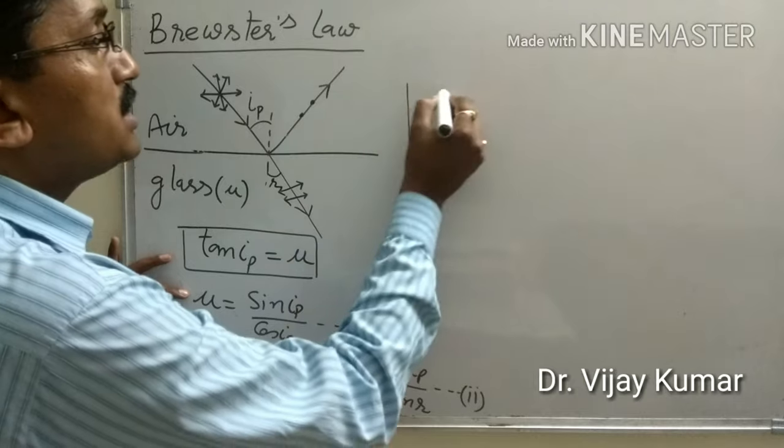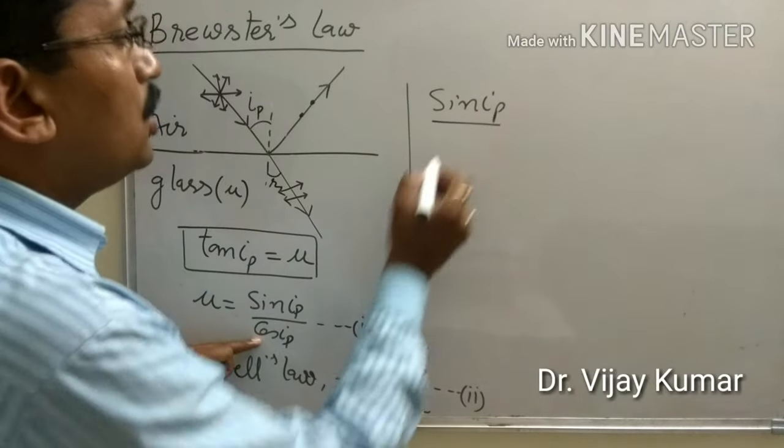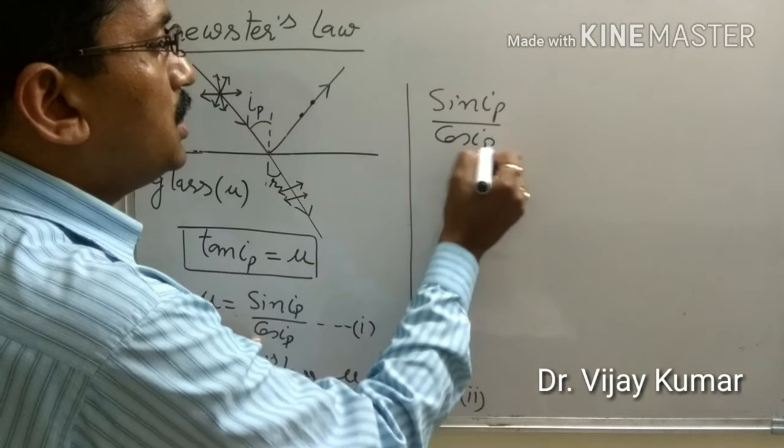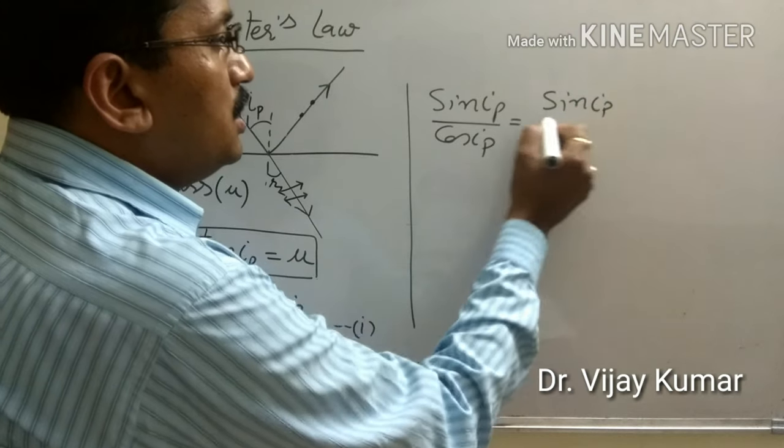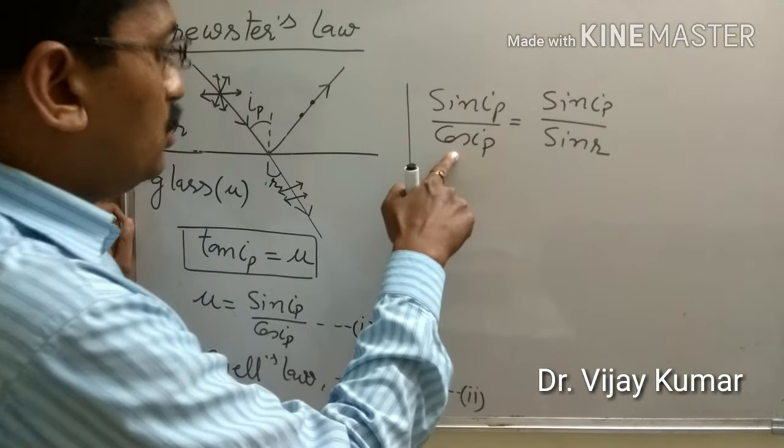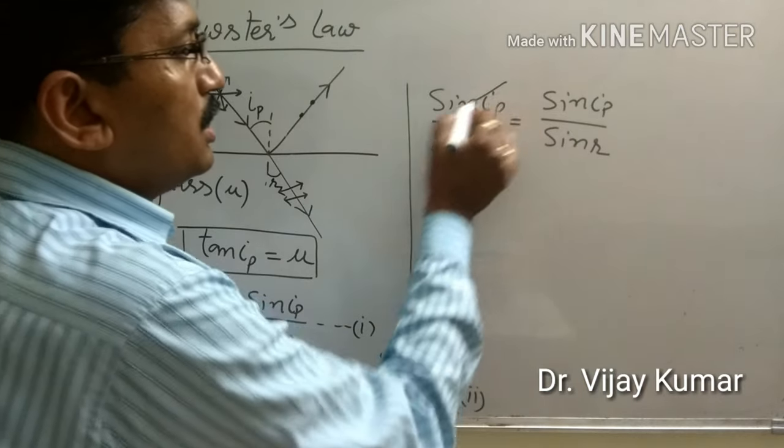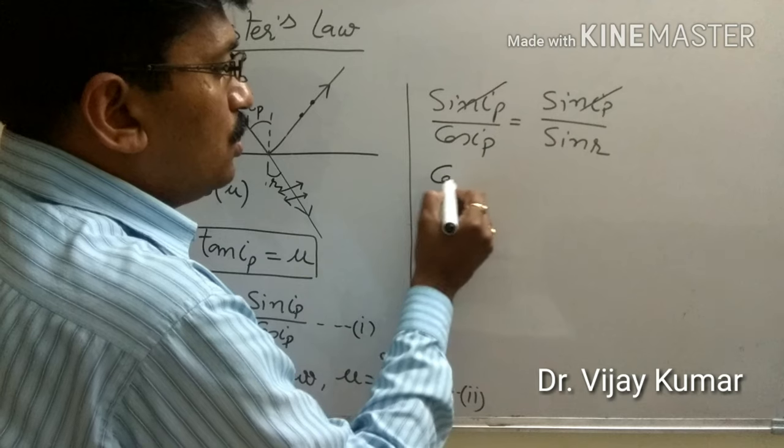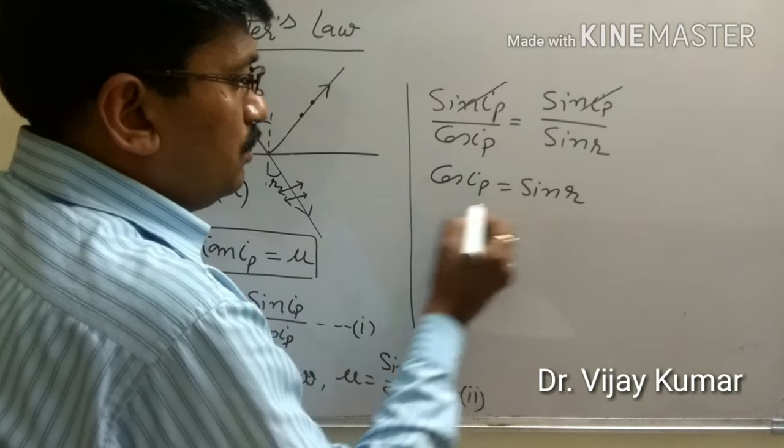This is Brewster's law and this is Snell's law. Now it is cancelled out, cos ip equal to sin r, or we can write sin r equal to cos ip means sin 90 minus ip.